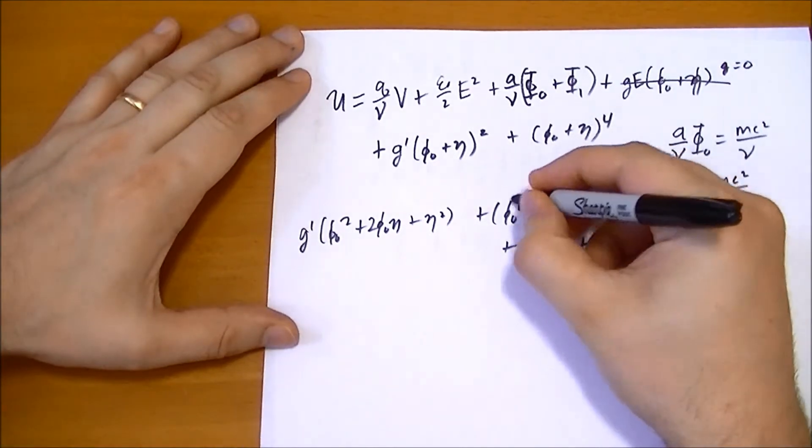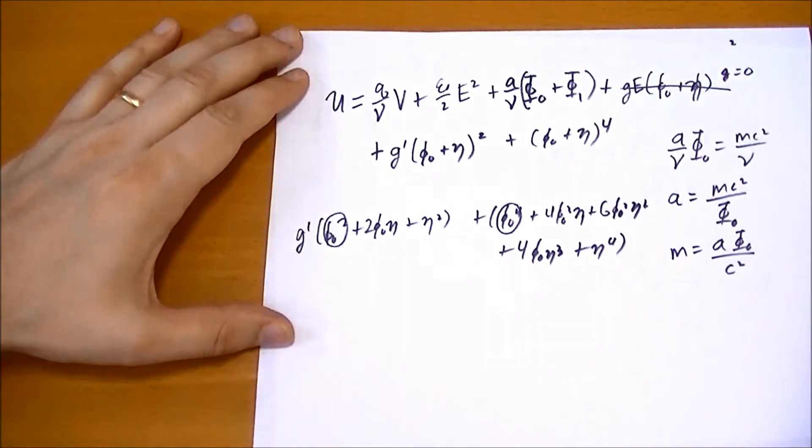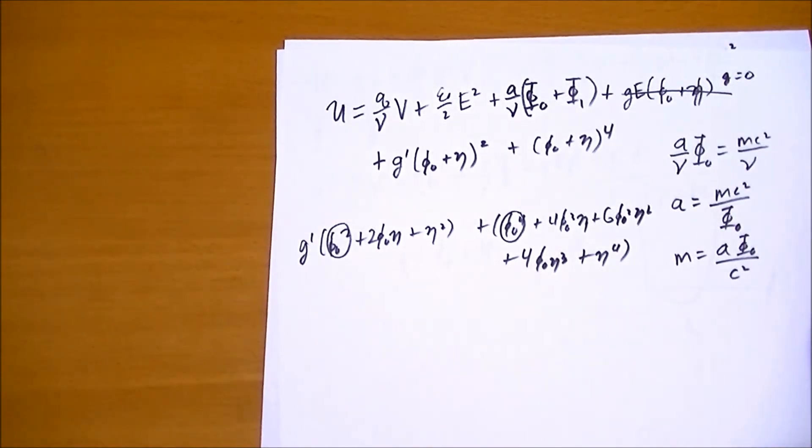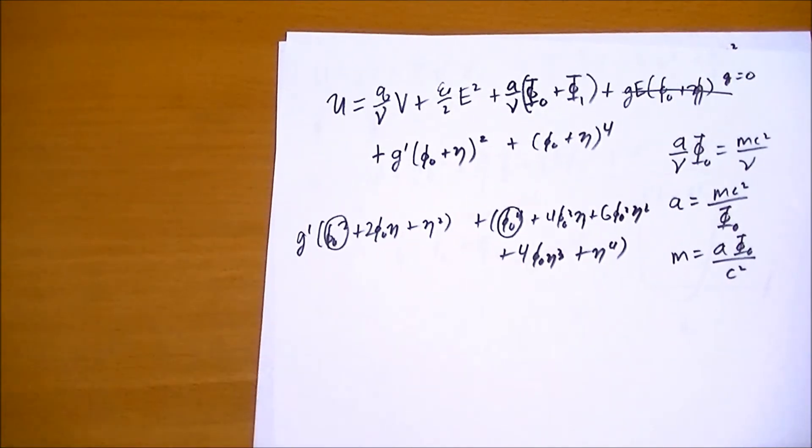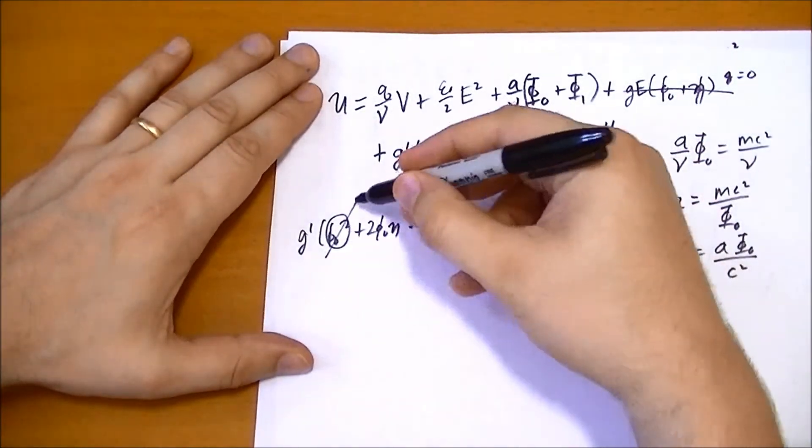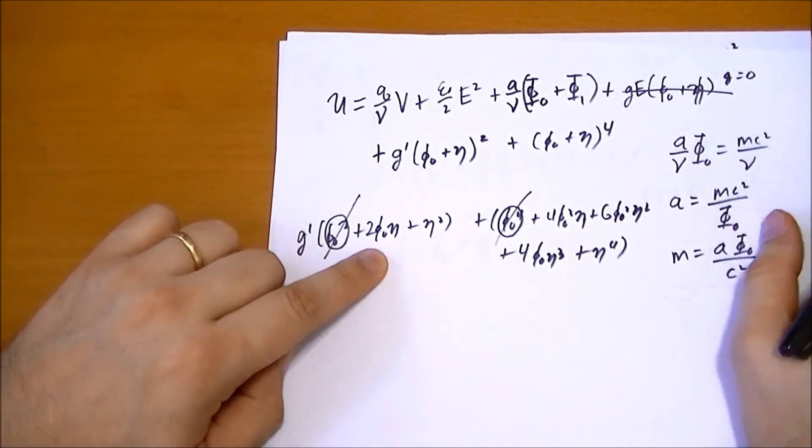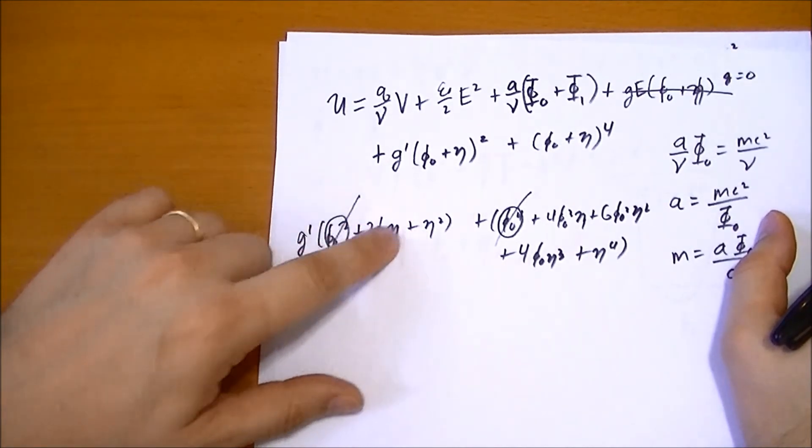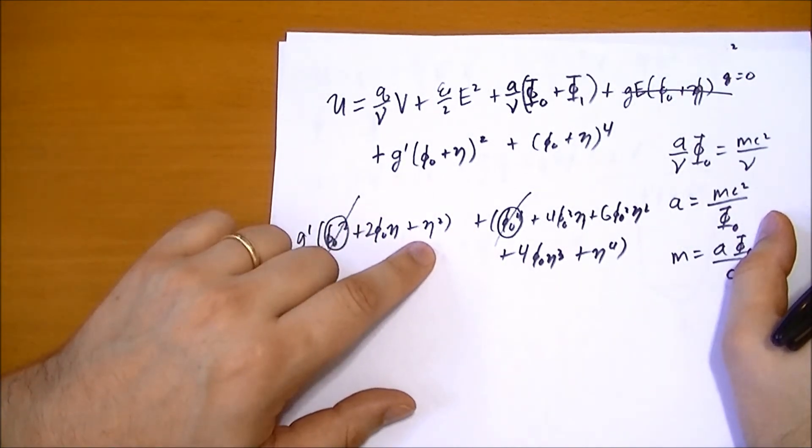Now, looking at this, these two terms are constants, right? And as we know that with energy, you can add or subtract any constants you want, as long as you do it all over space, and it doesn't really change anything. So we can ignore these terms. This term is interesting. This is the vacuum field interacting with the Higgs field. So there's some interaction there. And there's the Higgs field interacting with itself.